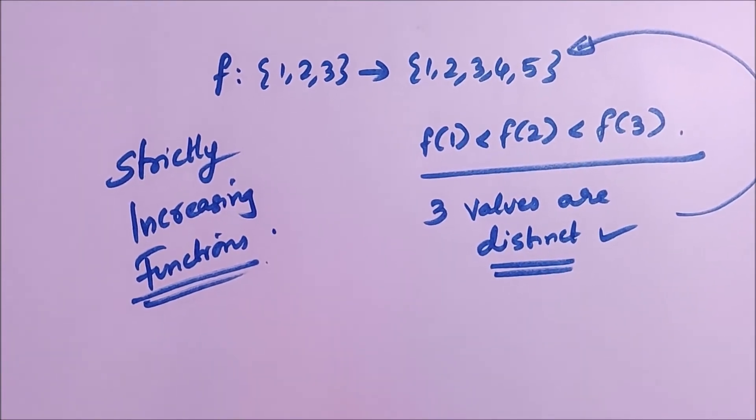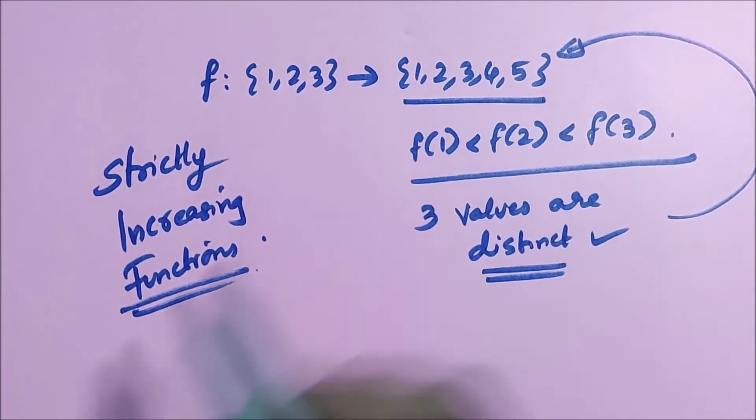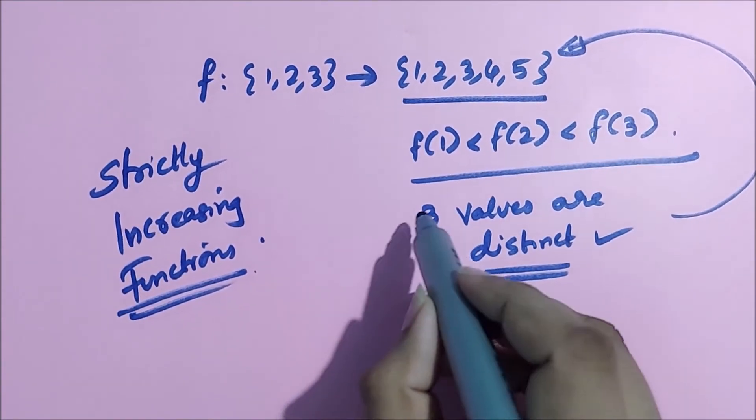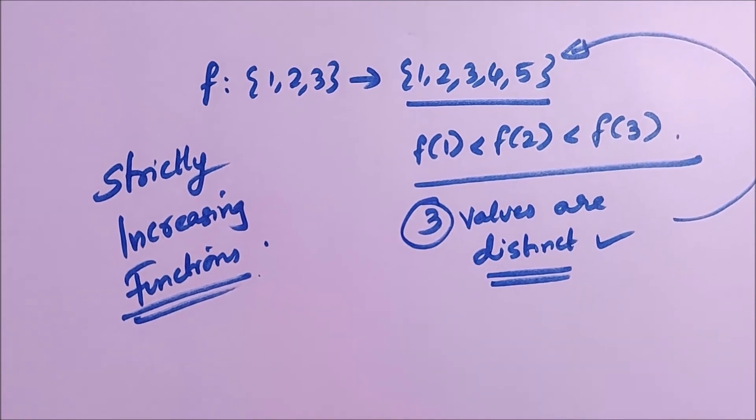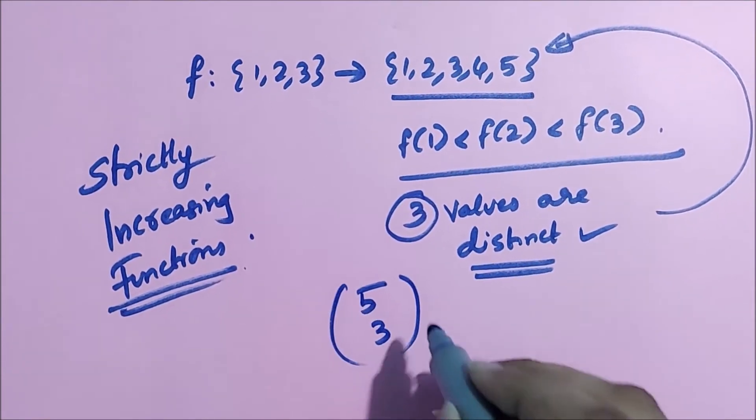So how can you choose these three values from this set? Of course, the cardinality of this set is 5, and we have to choose three values. How many ways can you do that? We can do that in 5 choose 3 ways.